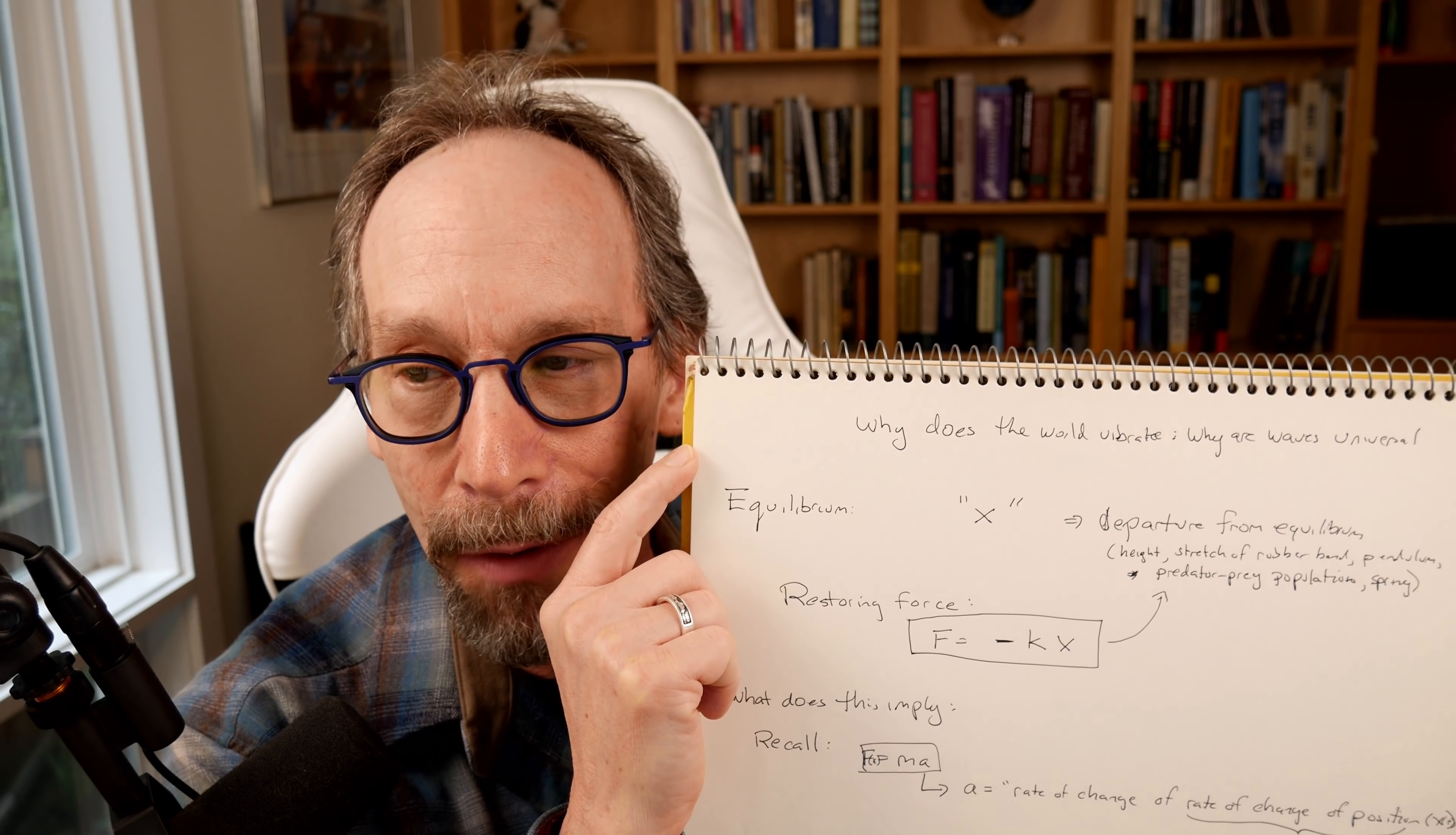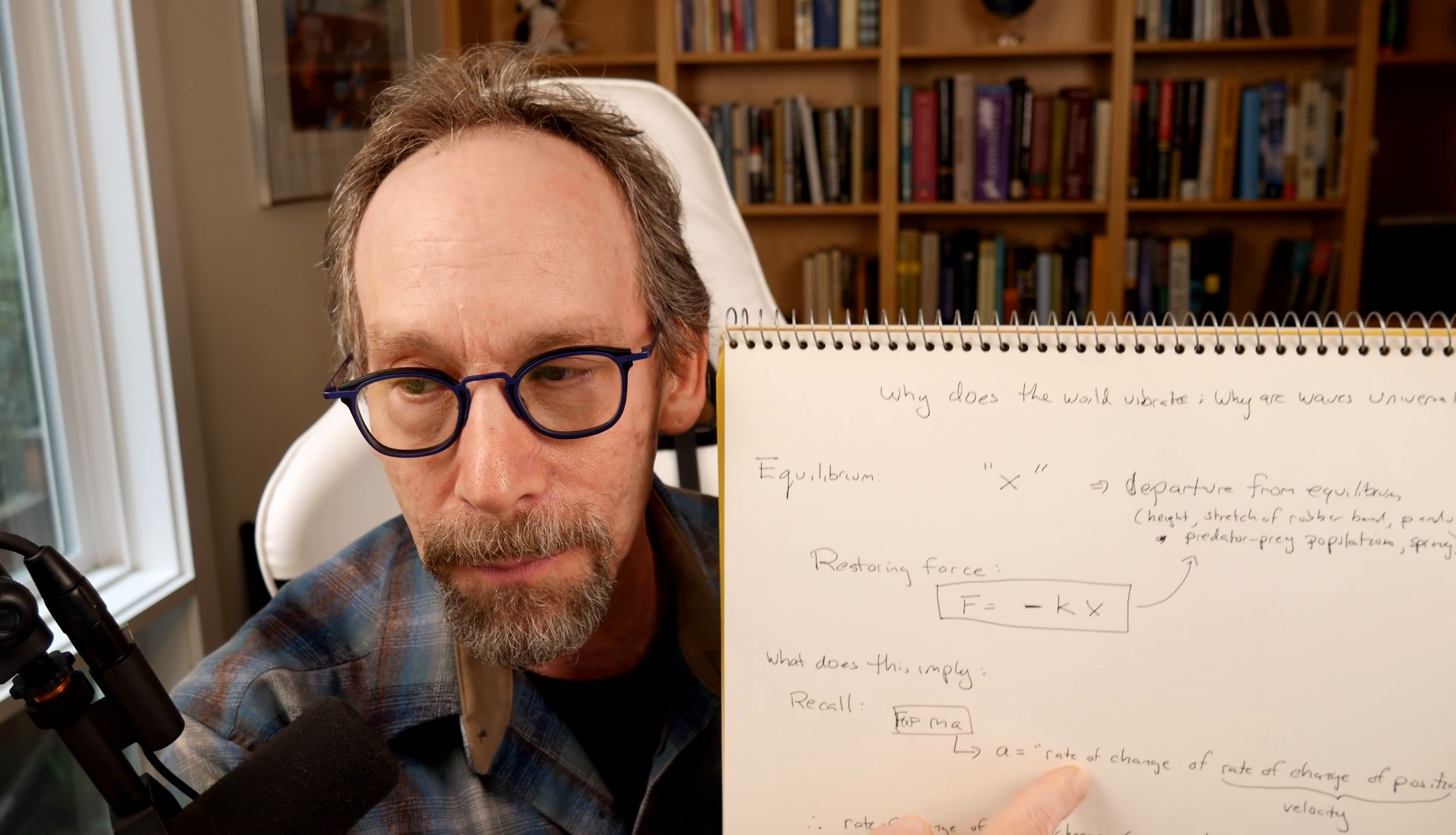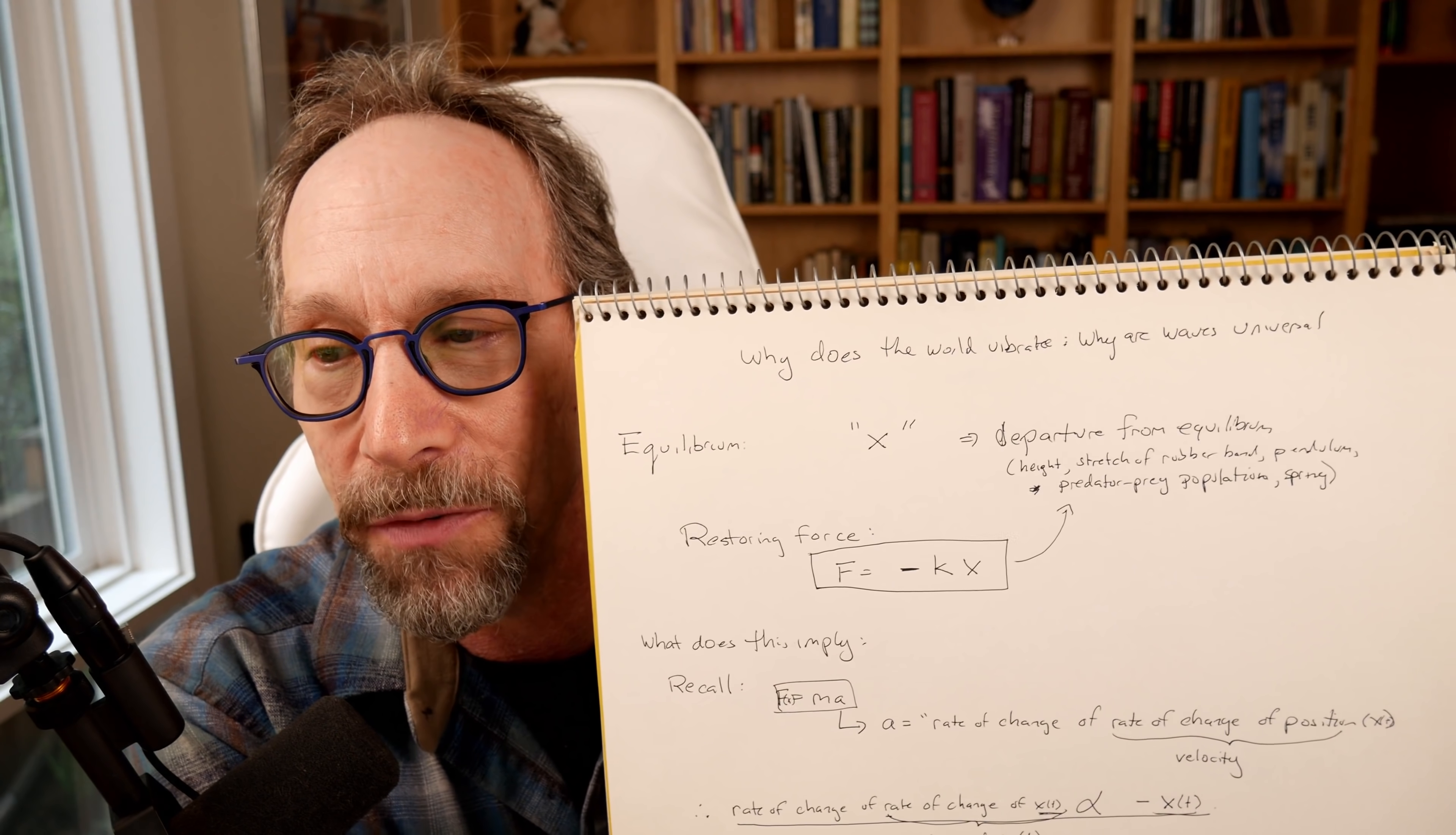So what does this imply? To understand what this implies, I want to refer to the one equation that I hope everyone remembers from high school physics: F equals mA. That's Newton's equations for motion. Now what does mA really mean? What does A really mean? The A is the rate of change of the rate of change of position. The rate of change of position is velocity. So that's the rate at which position changes. And acceleration is the rate at which velocity changes. So acceleration is the rate of change of the rate of change of position.